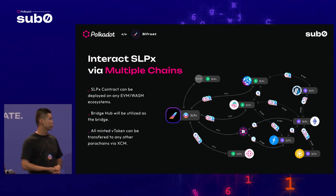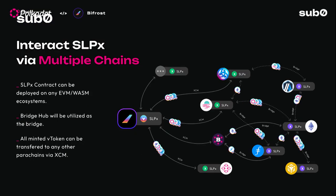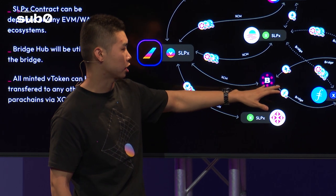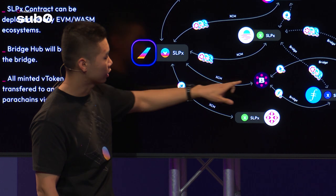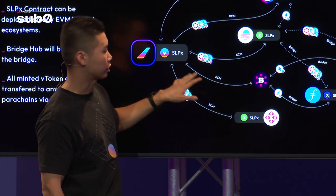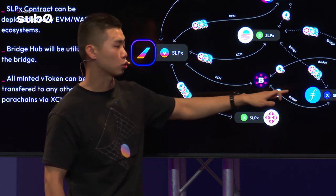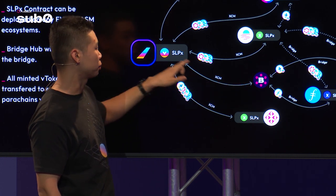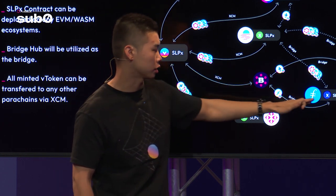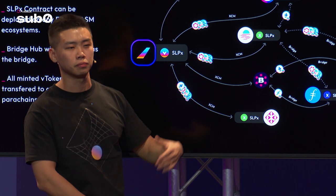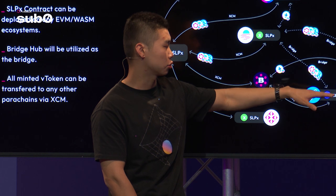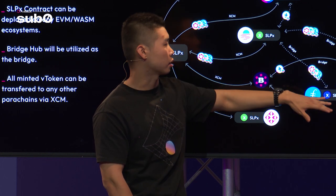The SLPX contract can be deployed on any EVM or WASM ecosystem. In this architecture, the purple chains connected with the BridgeHub are external blockchains where we deploy the branch contract, so they can remotely call Bifrost via the BridgeHub. The flow: initiate the request from the external chain, it goes through BridgeHub to Bifrost, which processes it and sends tokens back. For bidirectional lines connected with different external chains, third-party or external bridges connect them, so vTokens can also flow easily among multiple chains.